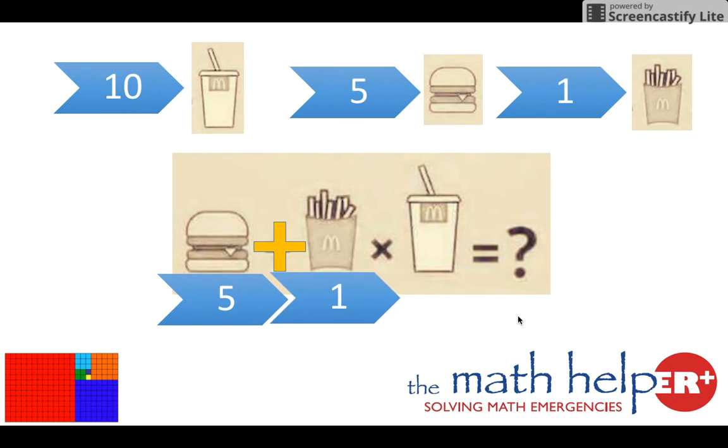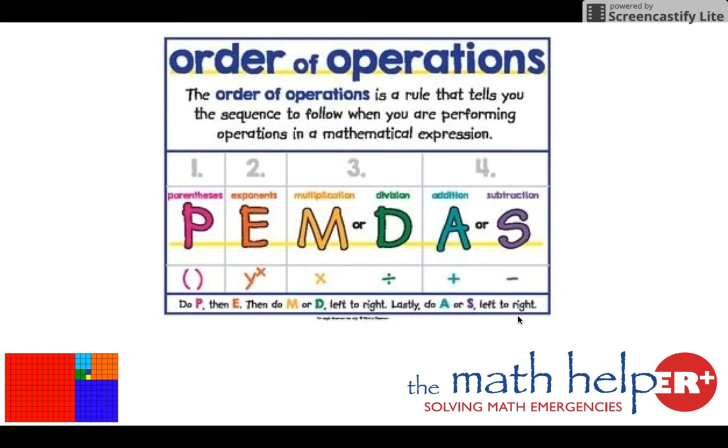Burger plus the fries times the soda. But we have to remember PEMDAS, or order of operations, is very important.